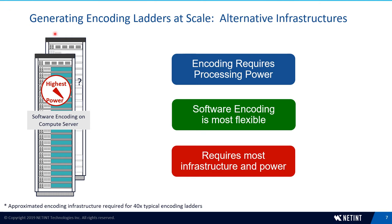Generating encoding ladders at scale requires extensive processing power, especially for live streaming, which will require even more infrastructure. With video trends toward more growth, higher resolution, and more complex codecs, this problem is only going to get worse. The most common infrastructure for encoding ladder generation is software encoding on compute servers, with variations including cloud-native solutions that work in containers or virtualization. The key benefit is flexibility, as you can use that infrastructure for different software workloads at different times of the day. The drawback is that this approach requires the most processing infrastructure, extensive equipment, and will have the highest power, real estate, and costs.